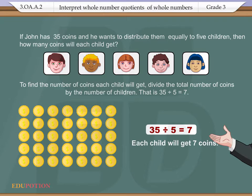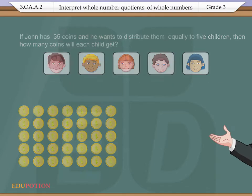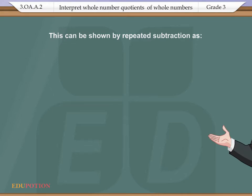Each child will get 7 coins. This can be shown by repeated subtraction: 35 - 5 = 30, which is step 1.